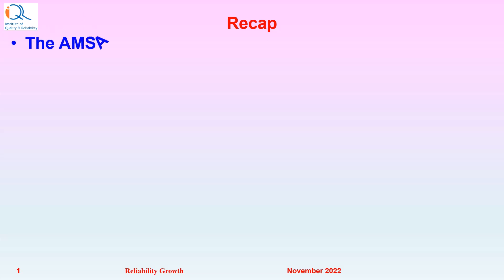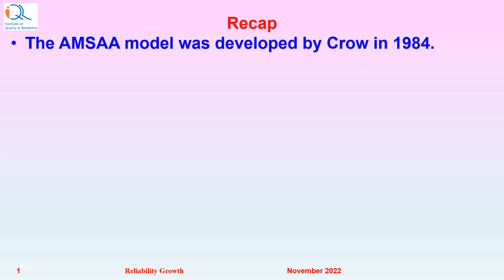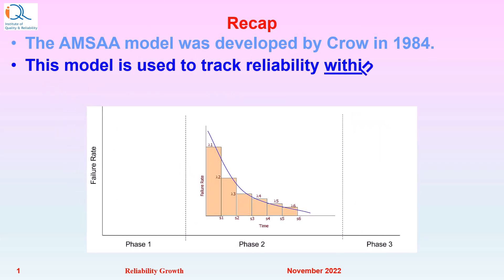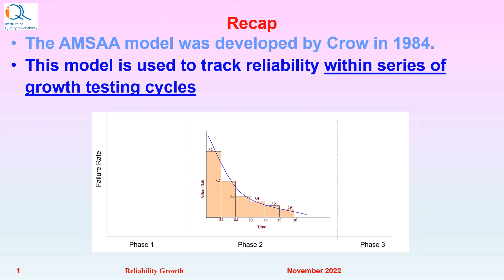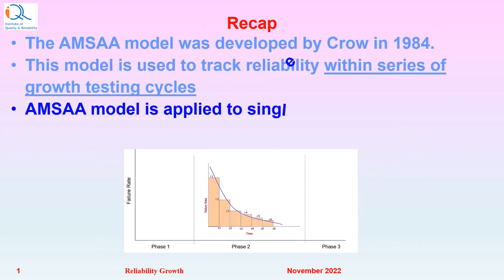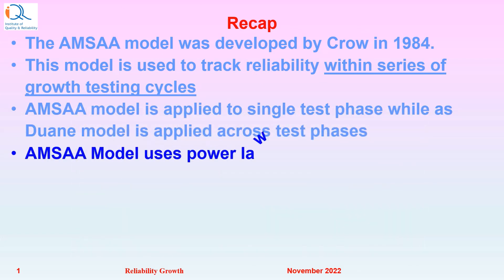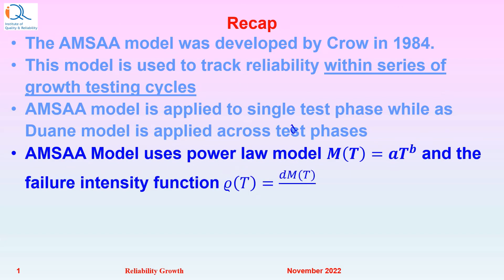Let us do a quick recap. The AMSA model was developed by Crow in 1984 and is used to track reliability within a series of growth testing cycles. The AMSA model is applied to a single test phase, while the Duane model is applicable across test phases. The AMSA model uses the power law: M(T) equals A times T raised to B, and the failure intensity function rho(T) equals A·B·T raised to B minus 1. The model has been illustrated with an application example.